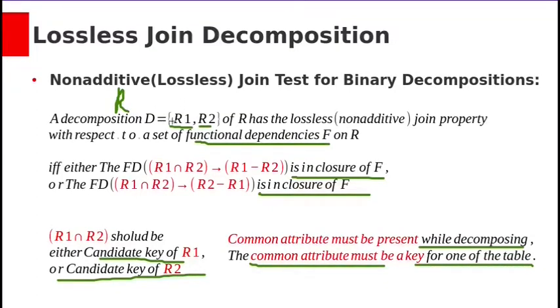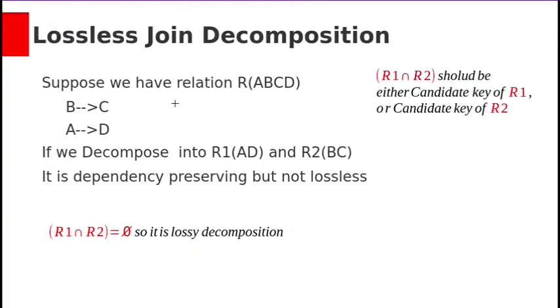If we decompose R into R1 and R2, common attribute should be key for either of these tables. Let's take one example. Suppose we have relation R with A, B, C, D attributes. Here we have FDs B determines C, A determines D.